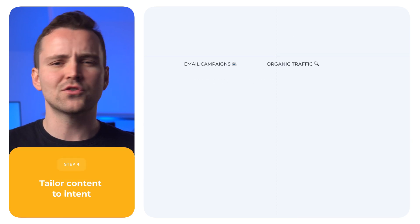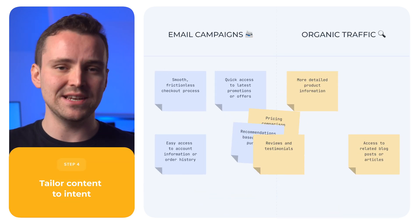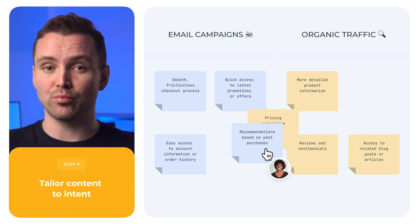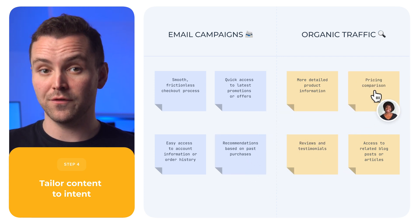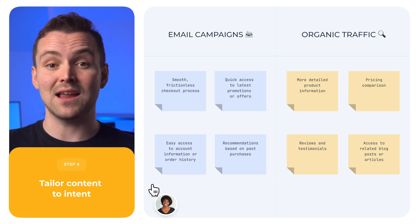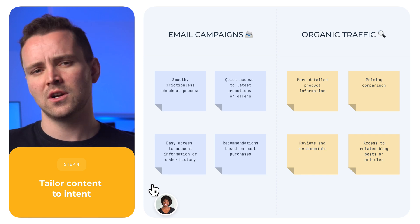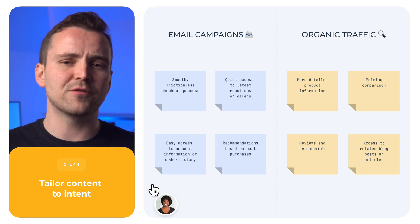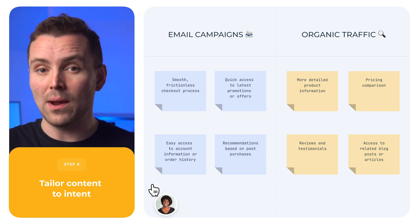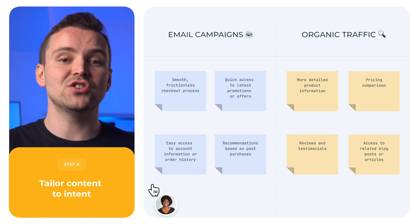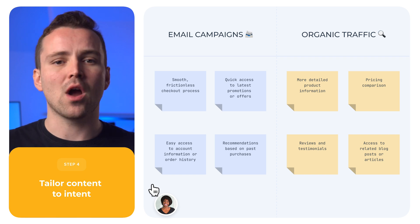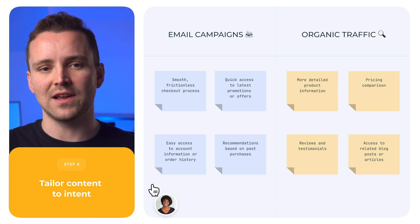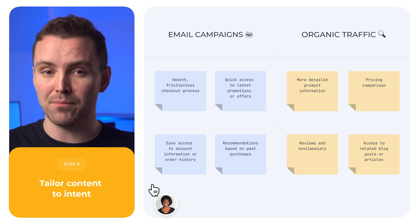Step 4: Sort out what info users need and when. Someone who arrives via an email to your product landing page is going to be further along in your funnel than someone who hits the same page from a Google search. They'll both want different things from the page. The one coming from Google will likely be looking for more info, so link to pages that provide it, while people coming from an email may just want a smooth, frictionless checkout process. Create flows for both.